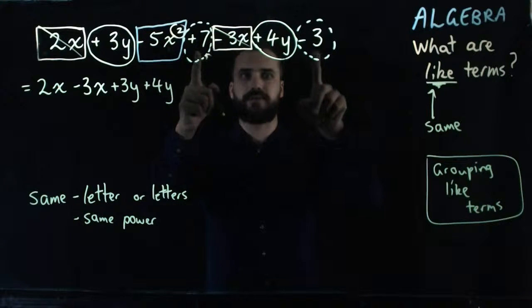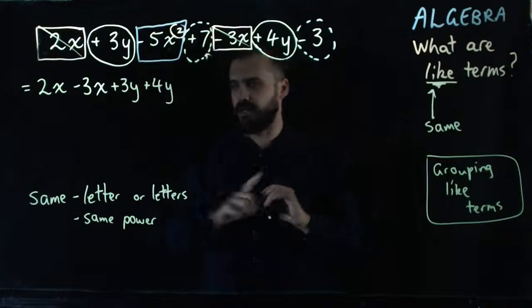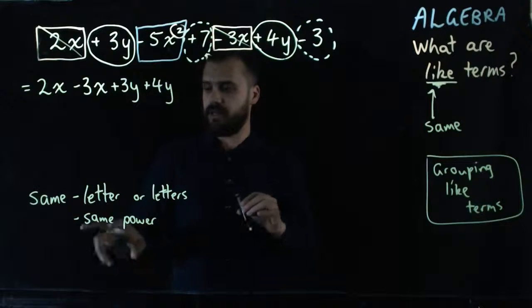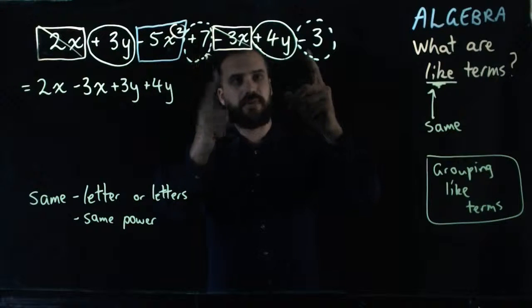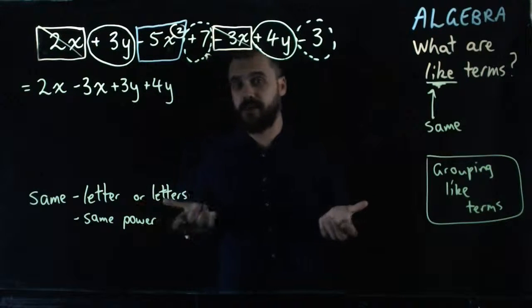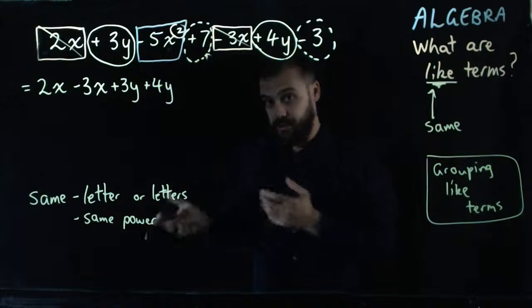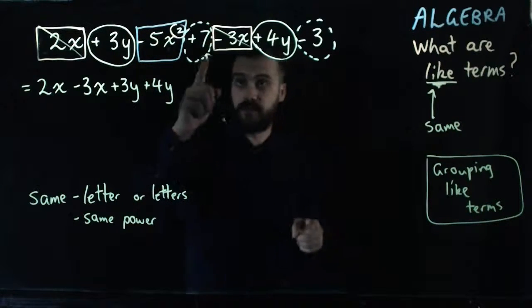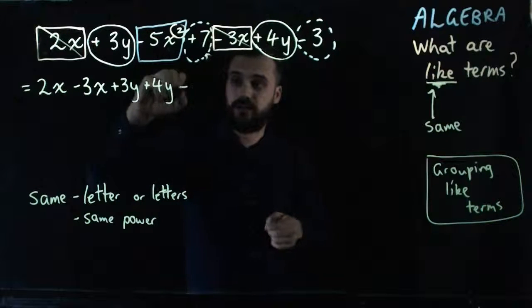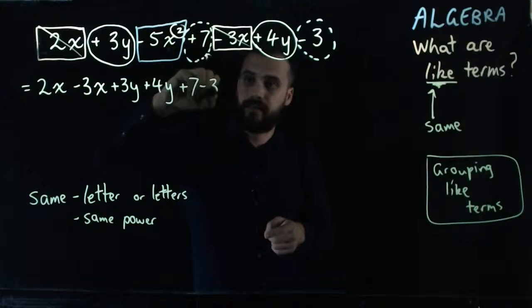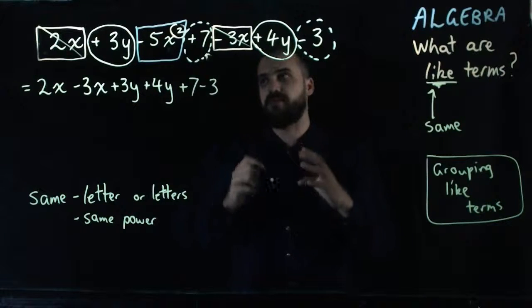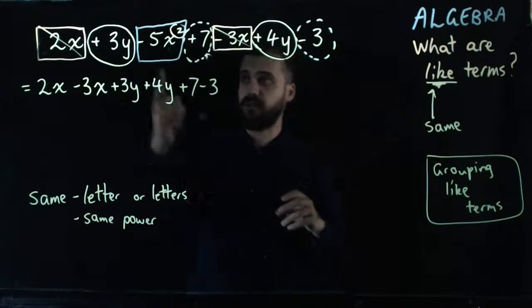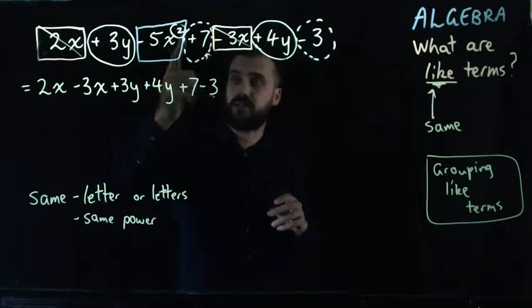This one. Now, this one's a bit of a trick one, because I said that like terms have the same letter or letters and the same power. Plus 7 minus 3. There's no letter. But no letter is still the same letter. Think about that for a second. Plus 7 minus 3. So I can group them. And then finally, there's one that can't be grouped, because it's all by itself. Minus 5x squared.